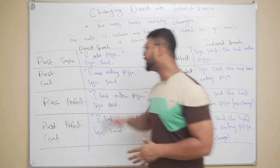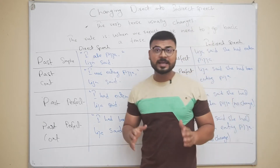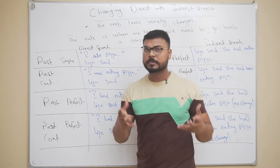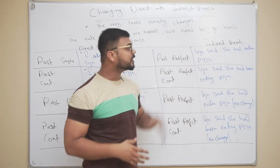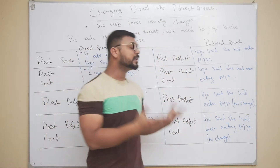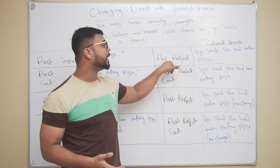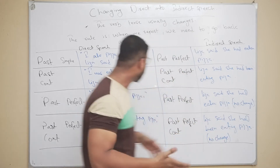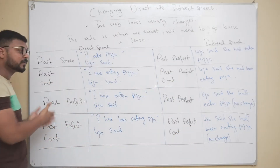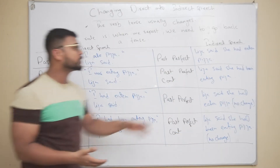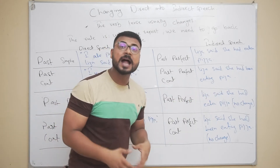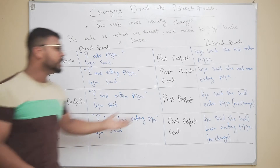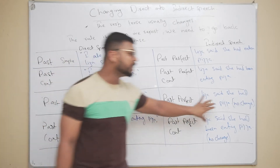Examples: Past simple — 'I ate pizza,' Lisa said. In indirect speech: Lisa said she had eaten pizza — past perfect. For past continuous — 'I was eating pizza,' Lisa said. In indirect speech: Lisa said she had been eating pizza — past perfect continuous.